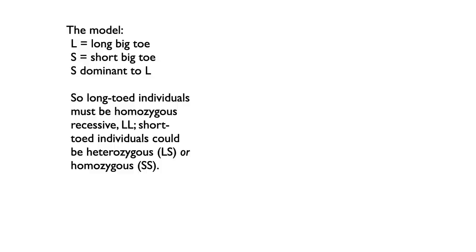Here's a model: what if we say that long big toe is coded for by allele L, and S is the allele that codes for short big toe? So we've got two alleles. And we say S is dominant to L. What that means is that long-toed individuals must be homozygous recessive — that is, LL. Short-toed individuals could be heterozygous LS or homozygous SS. If you had high school genetics, this was probably perfectly clear to you. This is the kind of thing we can go out and test — go out to the beach, look at people's toes, look at kids' toes and then ask their parents to show their toes, and take notes.